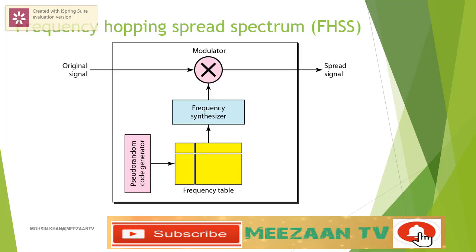The figure shows the general layout for FHSS. A pseudorandom code generator, called pseudorandom noise, creates a bit pattern for every hopping period T. The frequency table uses the pattern to find the frequency to be used for this hopping period and passes it to the frequency synthesizer. The frequency synthesizer creates a carrier signal of that frequency, and the source signal modulates the carrier signal. Note that the pattern is pseudorandom and is repeated after eight hoppings. This means that at hopping period 1, the pattern is 1 and the frequency selected is 700 kHz. The source signal modulates this carrier frequency, then the random process will select another k-bit pattern and frequency accordingly.